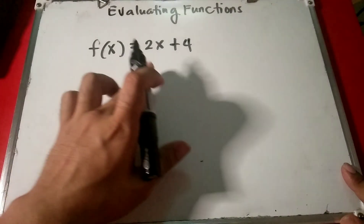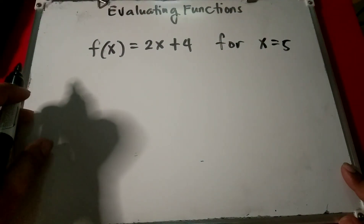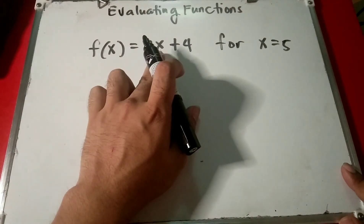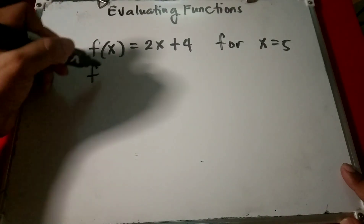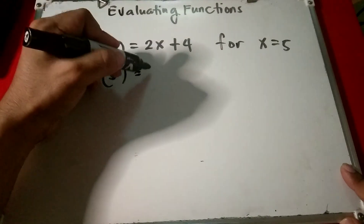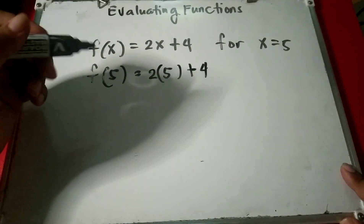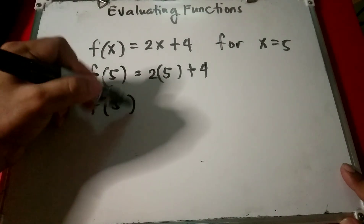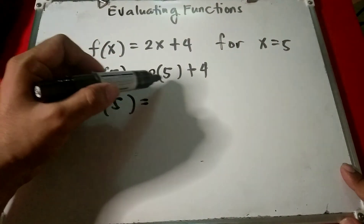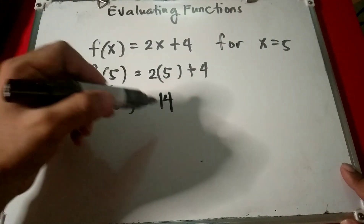In this example, f of x equals 2x plus 4. Evaluate the function for x equals 5 — just replace the variable x with 5. So we have f of 5 equals 2 times 5 plus 4, which gives us 10 plus 4, so the answer is 14.